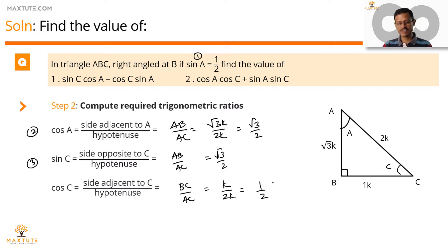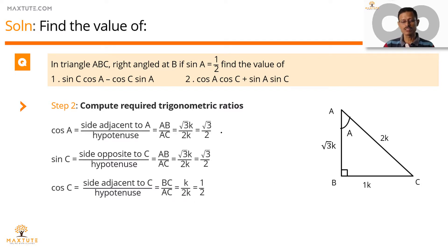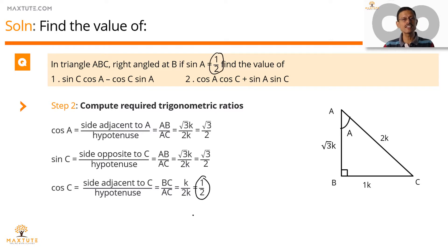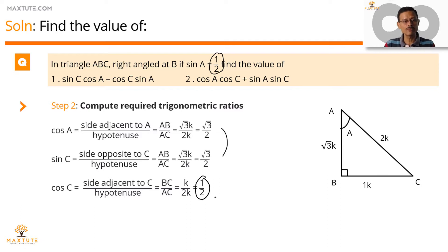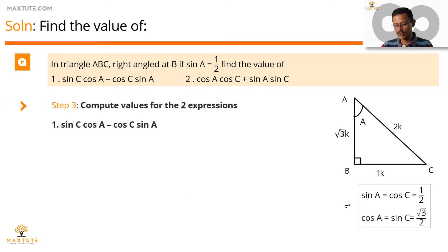Let's capture this in summary: sin A equals half, cos C equals half — we have seen in an earlier video that these will be the same. Similarly, cos A and sin C are both equal to root 3 by 2. Step 3 — let's use these values to compute the two expressions.